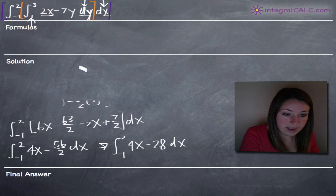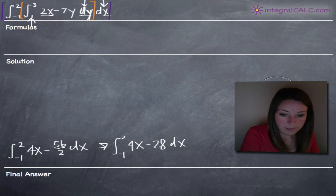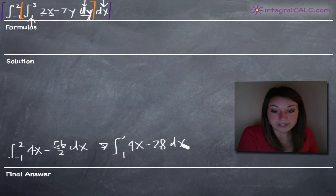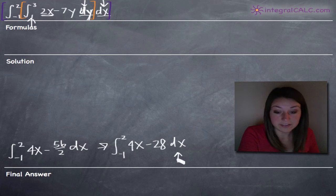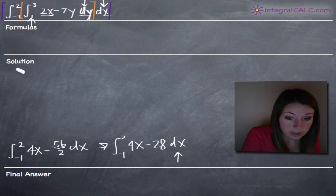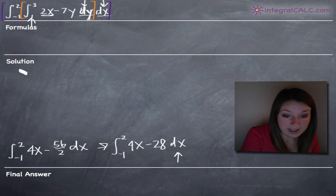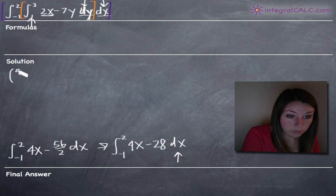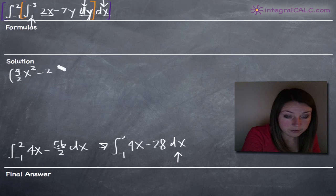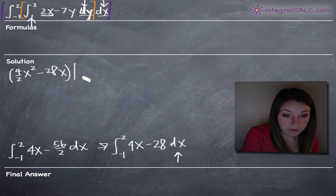Now we take the outer integral with respect to x, since dy is finished and dx is the notation remaining. The integral of 4x minus 28 with respect to x is straightforward: 4 divided by 2 x squared minus 28x, which is 2x squared minus 28x, evaluated on the range negative 1 to 2.